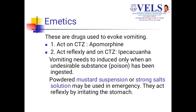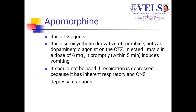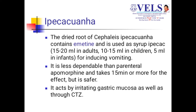Coming to emetics — these are drugs which induce vomiting or nausea. They act on the CTZ or reflexively act on the CTZ. Examples are apomorphine and ipecac. Apomorphine is a D2 agonist; it is a semi-synthetic derivative of morphine and acts as a dopaminergic agonist on the CTZ. An intramuscular or subcutaneous injection of 6 mg dose induces vomiting within 5 minutes.